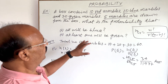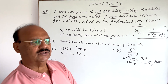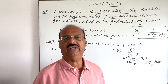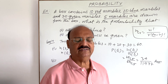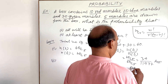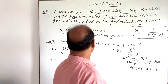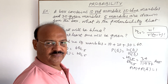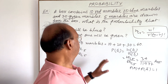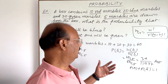For the second part — at least one will be green — we first find the probability that no marble is green. We use the formula: P(A) + P(not A) = 1. 'At least one green' means the complement is 'no marble is green,' so we compute P(no green) first and subtract from 1.